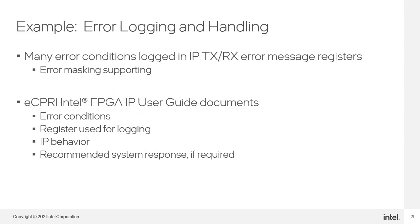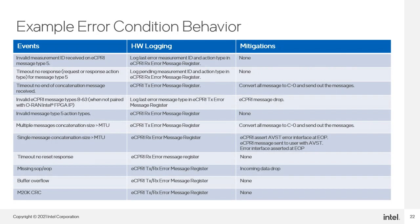The eCPRI IP CSR space contains many registers for monitoring and handling IP and transmission error conditions. For example, there are registers that flag things like buffer overflows, ECC errors, packet errors, and timeout errors. These registers are all documented in the eCPRI Intel IP user guide cited earlier. There you'll find the error conditions checked, the register and bit locations used for logging, how the IP behaves when these errors occur, and the recommended response from your system. This table provides examples of error conditions and recommended mitigations.